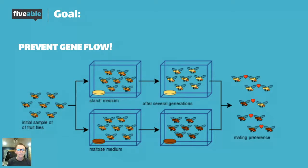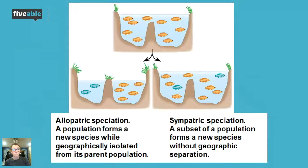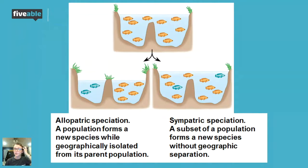So you've got to stop that gene flow, you've got to stop that reproduction — hence the reproductive isolation. So those barriers exist between species. When two things are considered different species, we have all of these different barriers that are making sure things don't reproduce. But when we are working towards speciation, there are two major types of ways in which we can get new species.